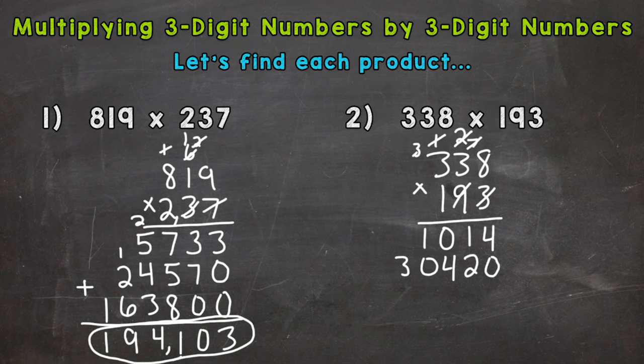Now we have 100 times 338, so that 1 has a value of 100, so we need two zeros. 1 times 8 is 8, 1 times 3 is 3, and 1 times 3 is 3. We get 33800.